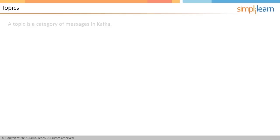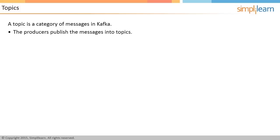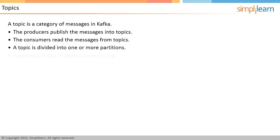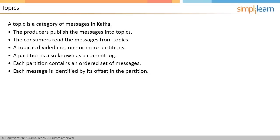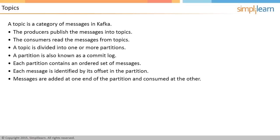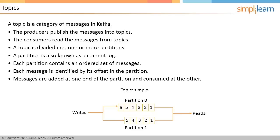A topic is a category of messages in Kafka. Producers publish messages into topics and consumers read messages from topics. A topic is divided into one or more partitions, also known as a commit log. Each partition contains an ordered set of messages, and each message is identified by its offset in the partition. Messages are added at one end of the partition and consumed at the other. The image illustrates a topic divided into two partitions, showing six messages in partition zero and five messages in partition one. The offset of the first message in partition zero is zero, and the offset of the sixth message is five.